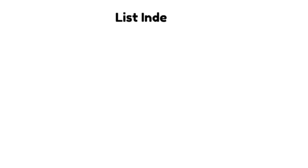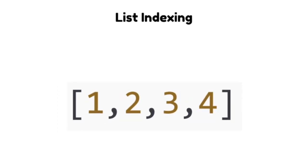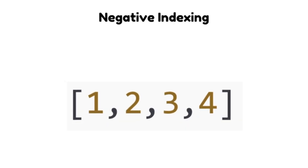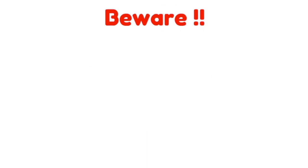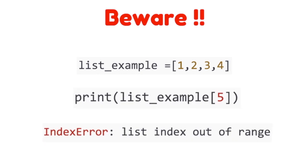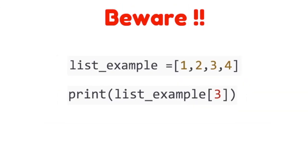Now let's talk about accessing elements of a list. We can use the same indexing method that we saw for strings in lists as well. A list having four elements will have indices from 0 to 3. We can also have negative indexing, so for the same list the indexing will go from minus 4 to minus 1. Beware: if you try to access an index outside the existing ones, Python will return an index error. Also, always use an integer data type for indexing — if you use any other data type, Python will return a type error.